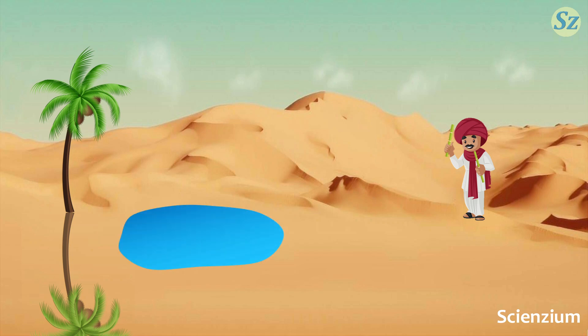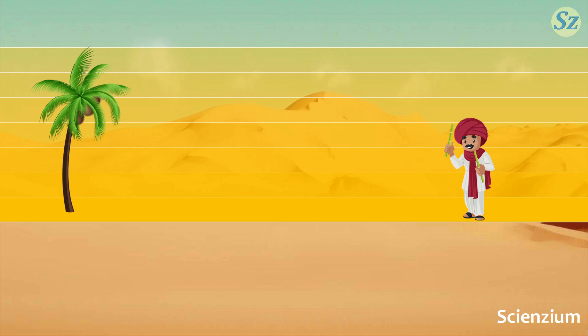The physics behind this illusion is very interesting. The desert floor gets extremely hot under the sun, but the air just above it doesn't heat up as quickly. As we go up, the air gets cooler. Now we visualize the air in layers. So we get cooler layers as we move upward.